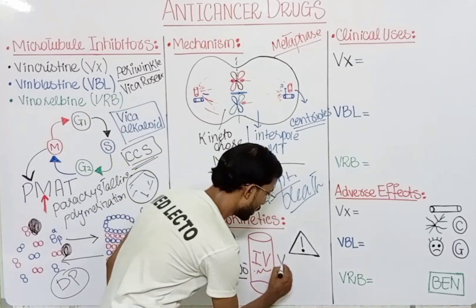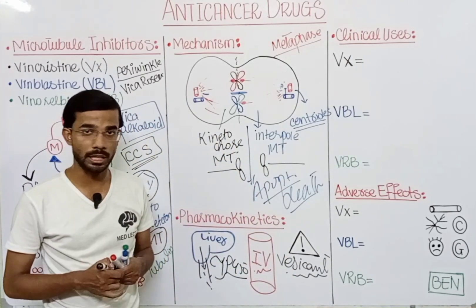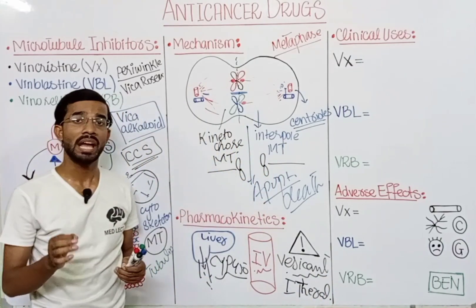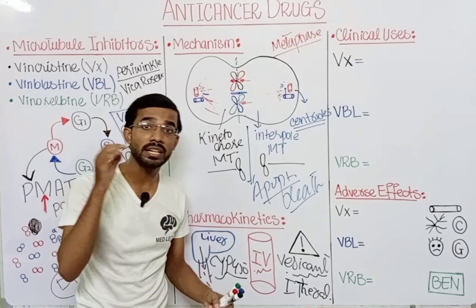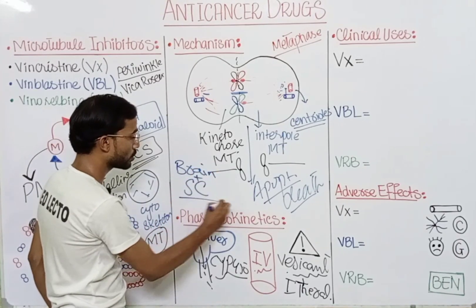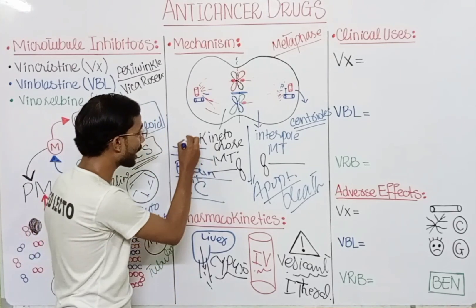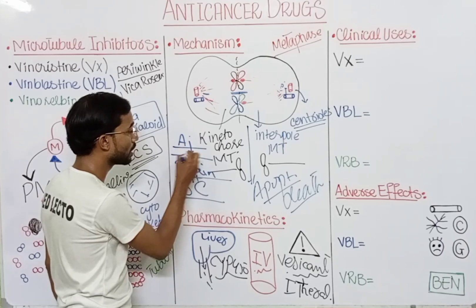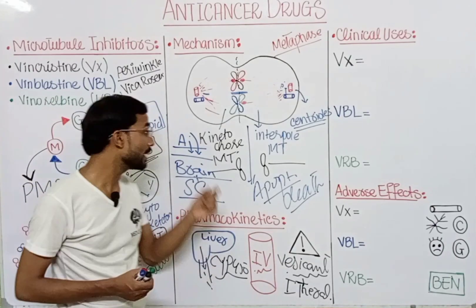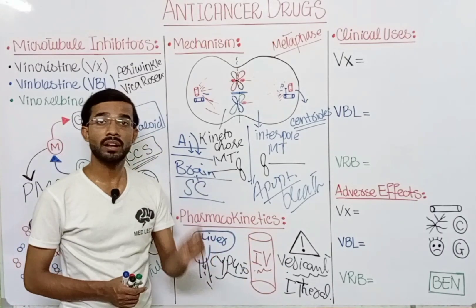Two important precautions: First, Vinca alkaloids are vesicants — they form blisters or cause redness on the skin. Second, they should never be administered via the intrathecal route. The intrathecal route involves injecting drug into the subarachnoid space surrounding the brain and spinal cord. Administering Vinca alkaloids intrathecally can lead to the death of the patient.